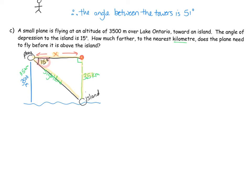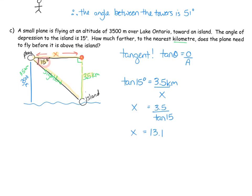If this is our reference angle, we have opposite over adjacent, so we're dealing with tangent. We set up: tan 15° = 3.5 km over x. Solving for x, rounded to one decimal place, gives 13.1. Therefore, the plane needs to fly 13.1 kilometers to be above the island.